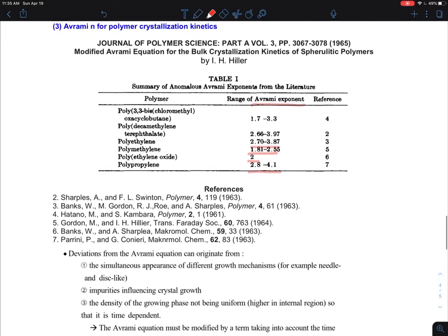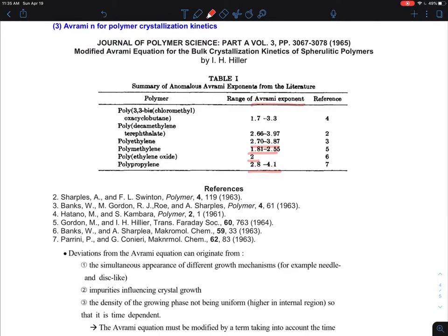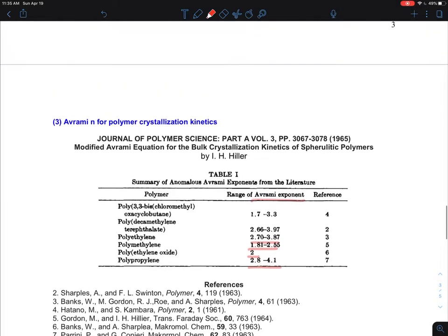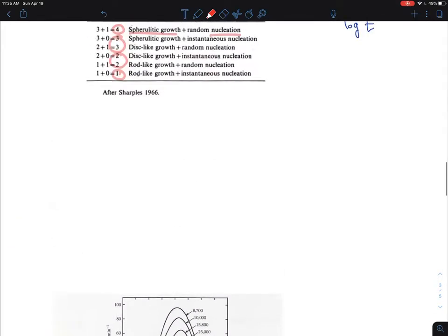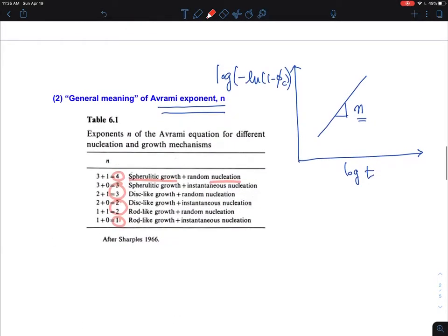That is a combination of not just the dimensionality and the nucleation type, but also essentially different factors based on the assumptions that are going to be changing the oversimplified picture by the Avrami equation. But this is the way that I made a correction.